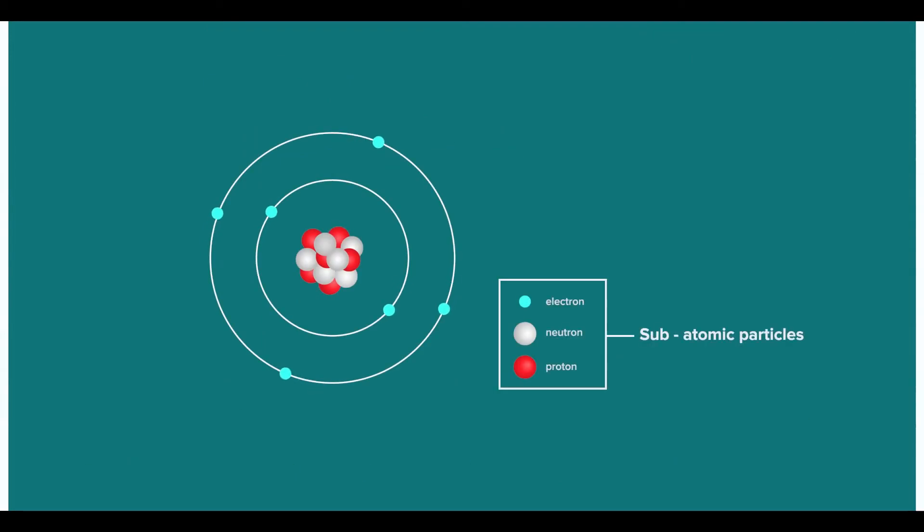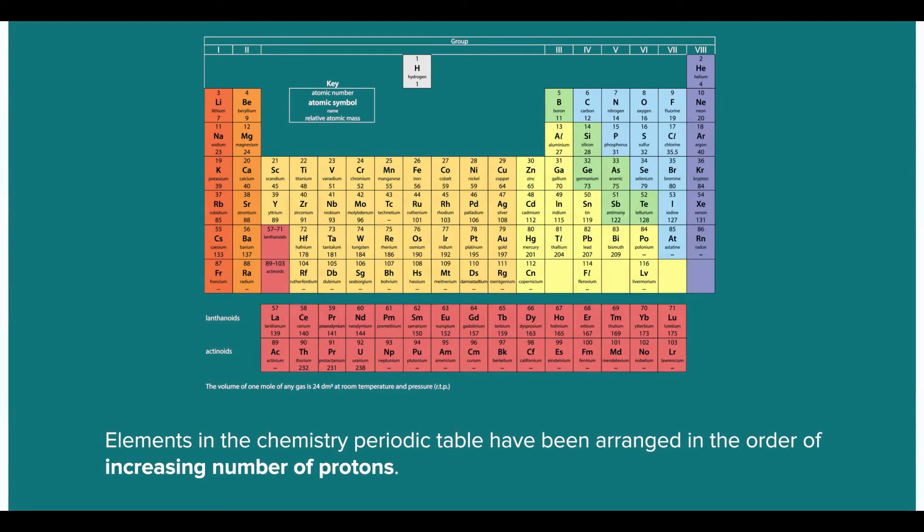After the discovery of subatomic particles, chemists realized that elements in the chemistry periodic table have coincidentally been arranged in the order of increasing number of protons.